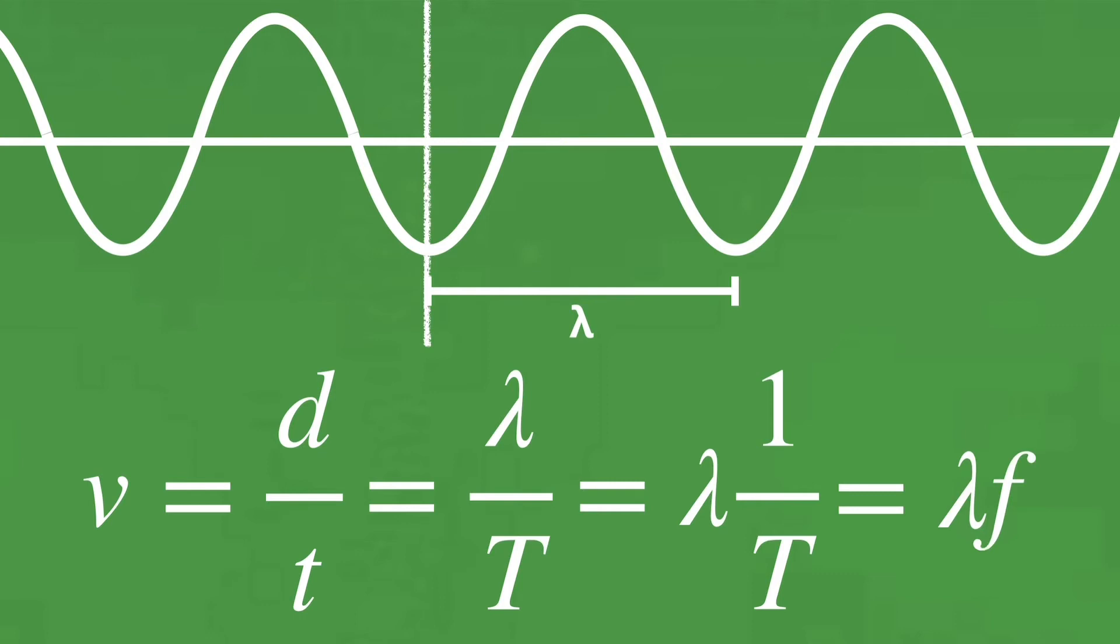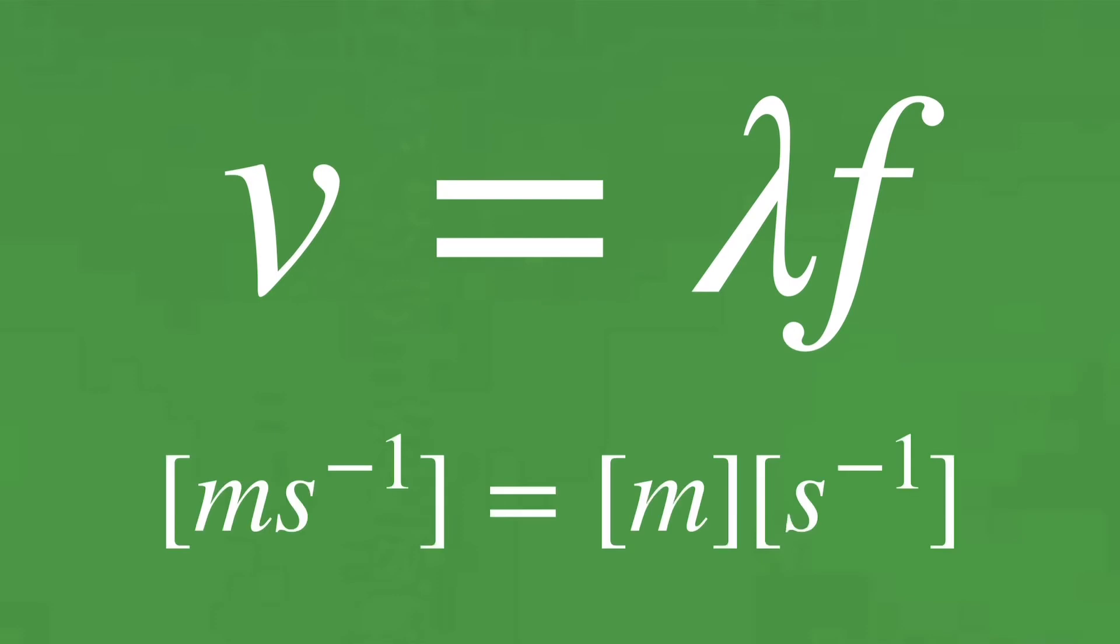Of course, it can also be quickly remembered using dimensional analysis. The unit of wavelength is the meter, the unit of frequency is per second, multiply them and you have the units for speed, meters per second.